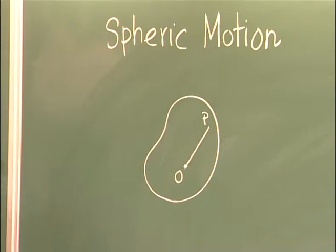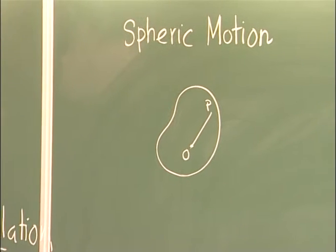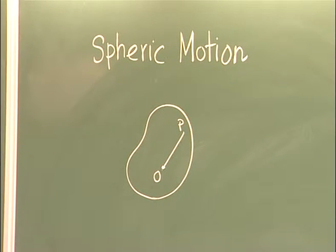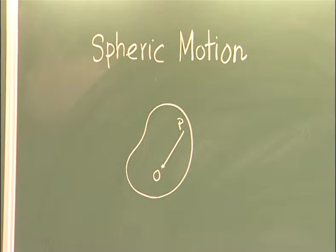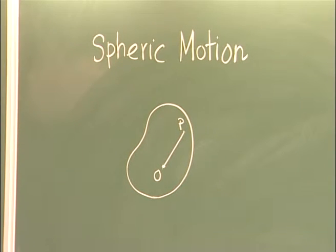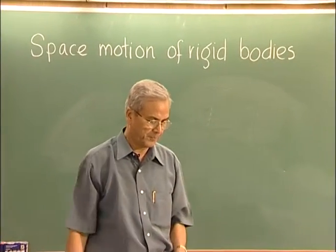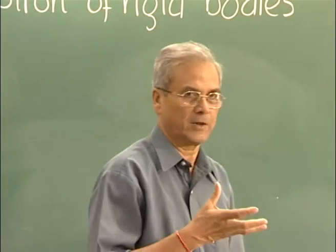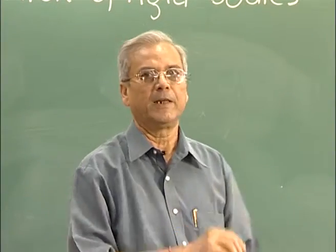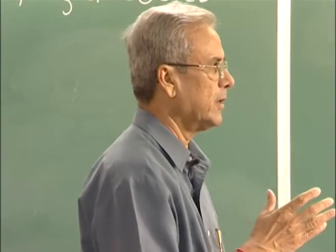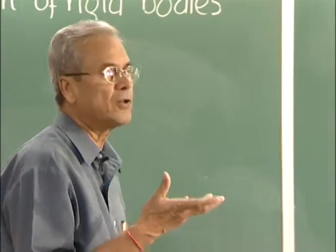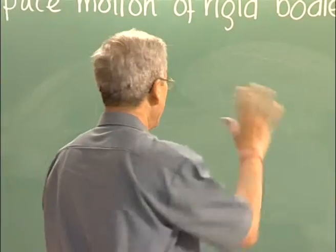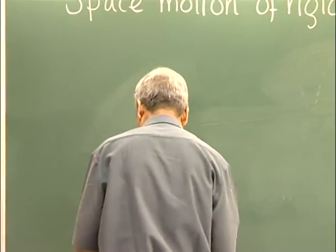Thus any general motion of a rigid body is a combination of a pure translation and a spherical motion. Now, before we proceed further, let us consider the question of rotation. Rotation is nothing but the change of orientation. If we identify a reference line on the body and note its original inclination, then rotation is given by the change of that line from its initial to final position.